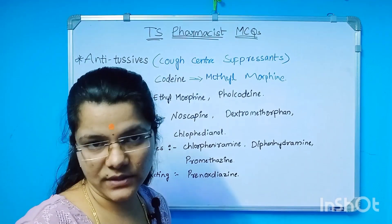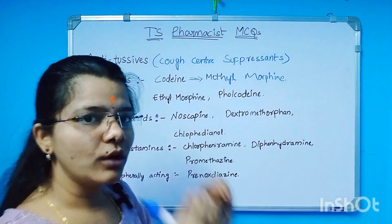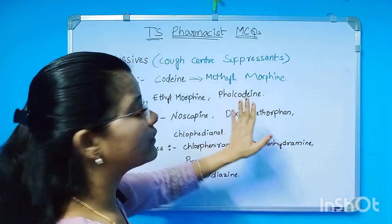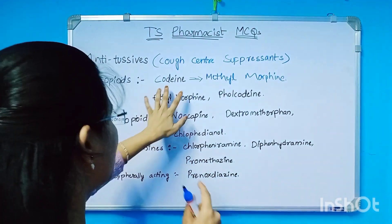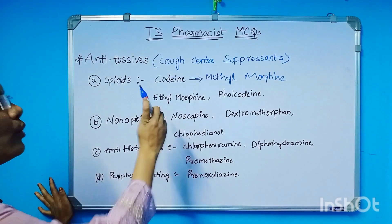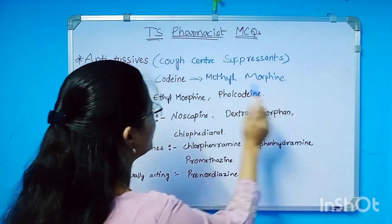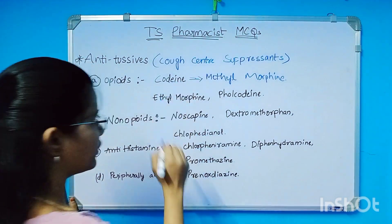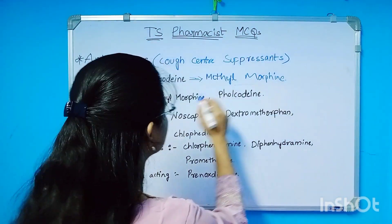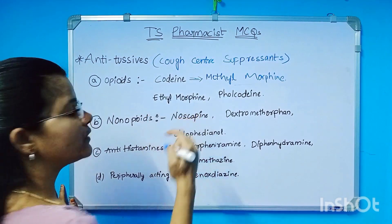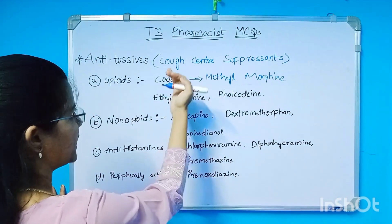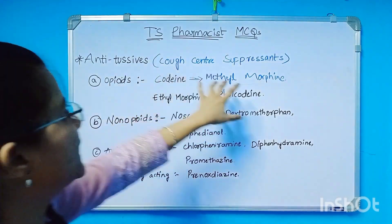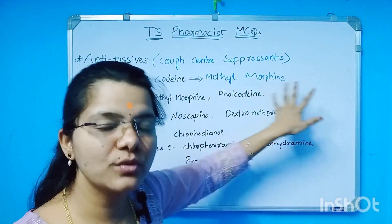Which of the following is an antitussive? The answer is Methylmorphine. Codeine is also known as Methylmorphine. Ethylmorphine is closely related to Codeine, which is also called Methylmorphine. So you can choose the Methylmorphine option.